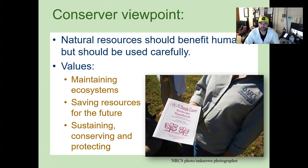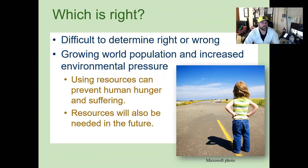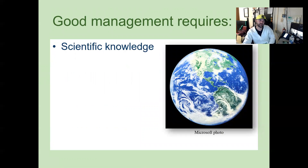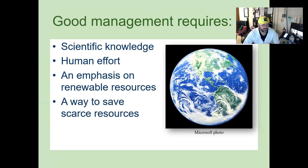I'm kind of more of the conserver standpoint. I believe we need to use what we need, but we also need to give back and allow for future generations to use that area. So which one's right? It's difficult to determine right or wrong given a growing world population and increased environmental pressure. Using resources can prevent human hunger and suffering, but resources will also be needed for the future. So the right type of planning and conserver standpoint is where I believe the right type of use lies. Good management requirements include scientific knowledge, human effort, an emphasis on renewable resources, and a way to save scarce resources. I can't stress enough that if you're going to use something, you should definitely replace it over time, so we can continue using resources and replacing them for future generations.